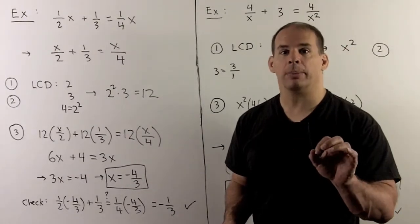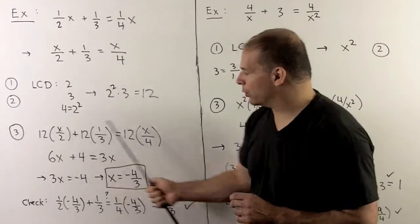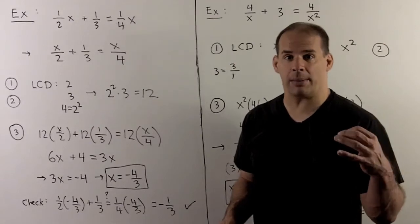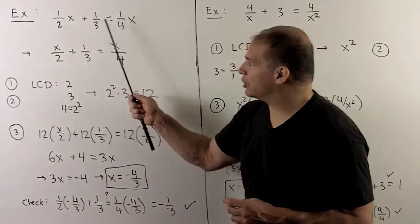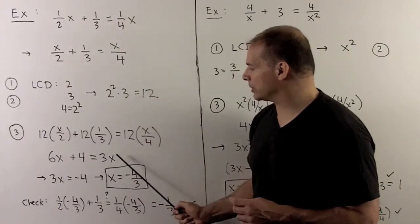We're not doing that here. All I'm using the least common denominator for is to multiply through the entire expression. So we're not trying to get things over a common denominator. Now, multiply each term by 12, what comes out: we're going to have 6x plus 4 equal to 3x.